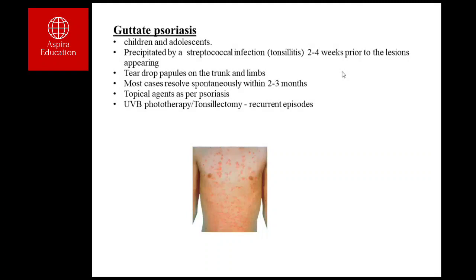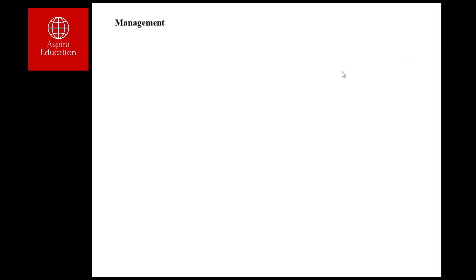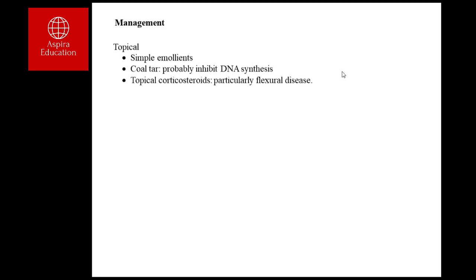For recurrent guttate psoriasis, UVB phototherapy or tonsillectomy may be used. Regarding general management of psoriasis: since it is an autoimmune disease, treatment is indicated when it causes significant impact. Initially, simple emollients can be applied for dry lesions. Coal tar inhibits DNA synthesis, slowing cellular proliferation, which is the key mechanism in psoriasis.